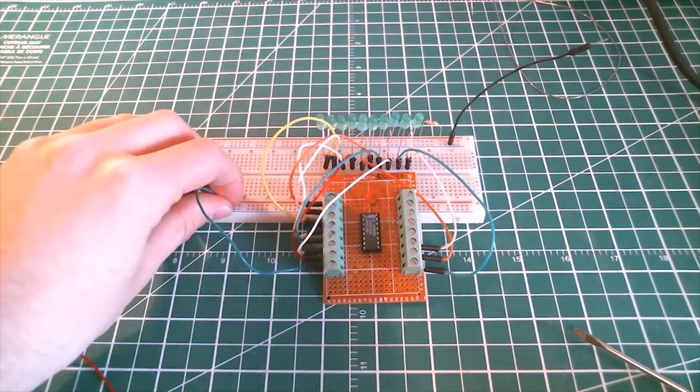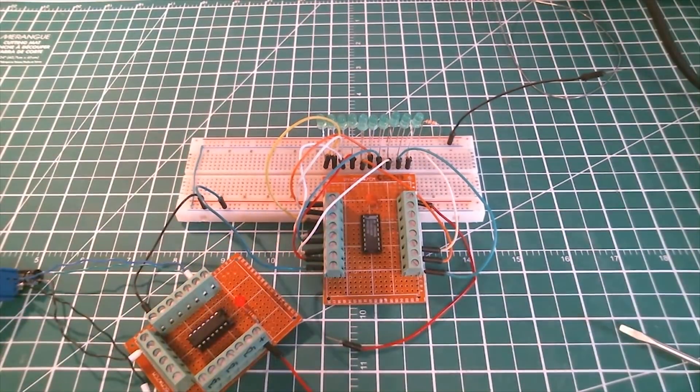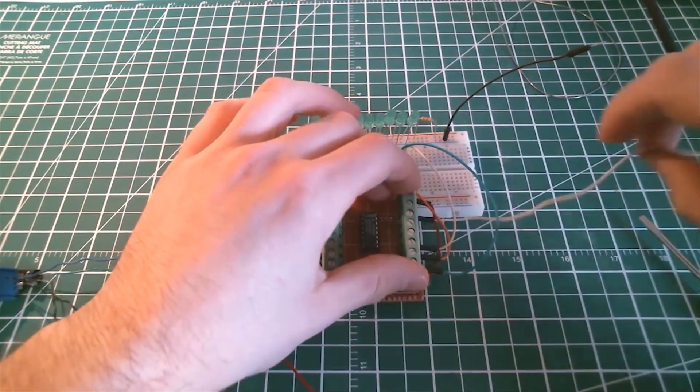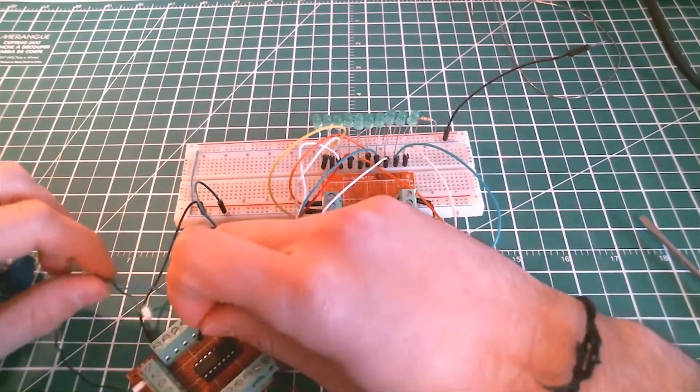Remember to tie the reset and clock enabled pins to ground. Finally, take your CD40106 module and plug the output of the first oscillator to the clock pin of the counter module.